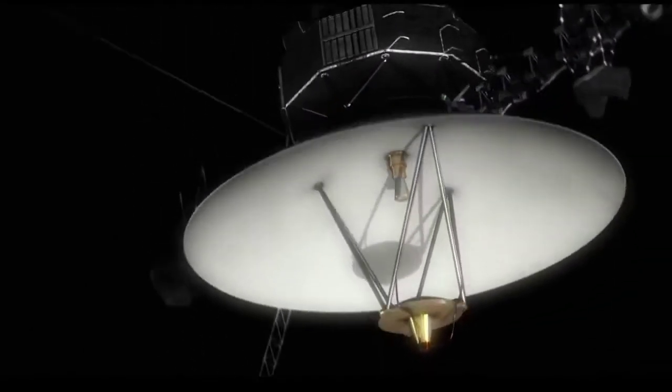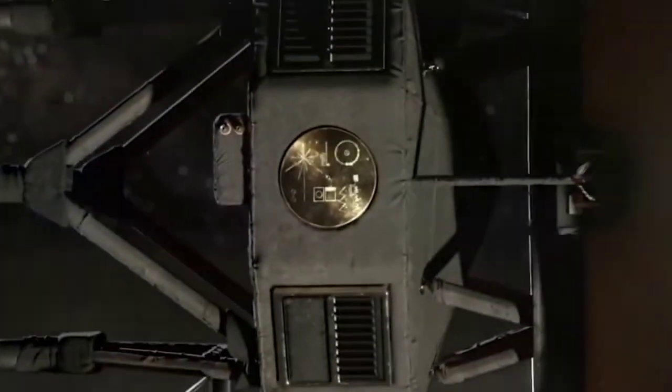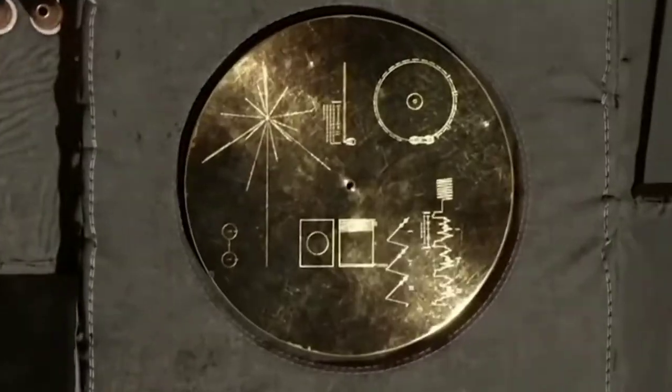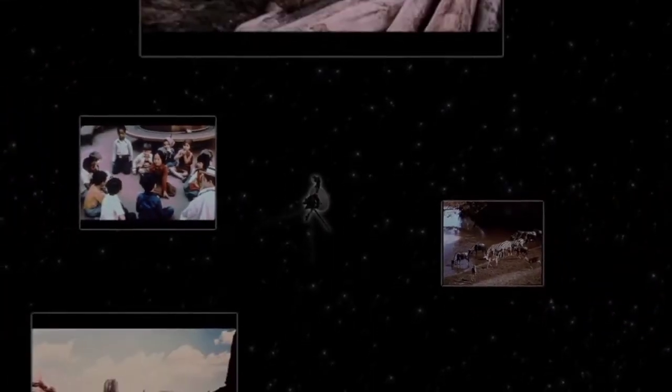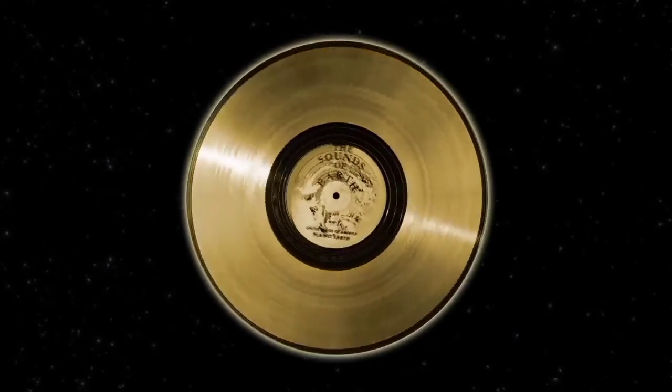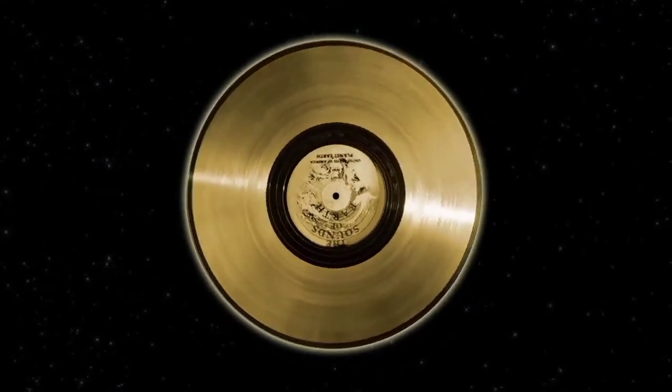But what if they do? Then they would have to separate the golden records from the 1,820 pound spacecraft. On the record is a collection of images and sounds from Earth. But aliens may not know what to do with a phonograph record. So NASA has to provide a set of instructions on how to make the records work. But how do you begin to communicate with a life form of which you have no idea of?